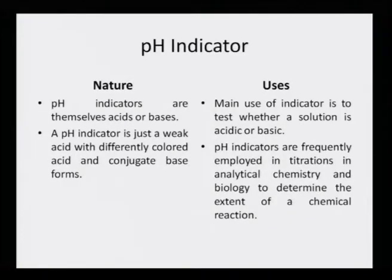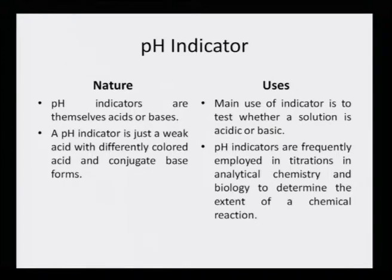The nature of pH indicators is that they are themselves acids or bases. A pH indicator is just a weak acid with differently colored acid and conjugate base forms. When we have any acid, there is a reversible reaction and H⁺ goes away, and whatever remains is the conjugate base. So if any molecule is protonated at one point in time, the loss of the proton will leave behind the unprotonated part as the conjugate base.